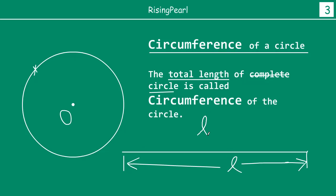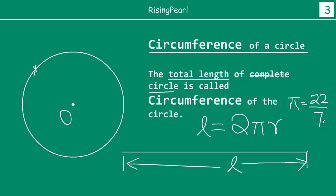We have seen in our earlier grades that this length is 2πr, where pi is equal to 22/7 — it's a special number expressed as the ratio 22 by 7. And r is the radius of the circle. So the entire length of the circle is 2 times pi times r.